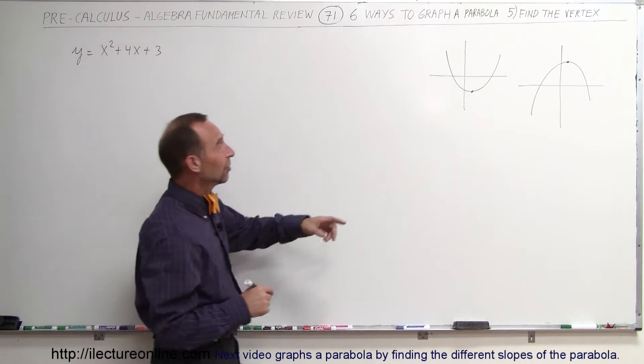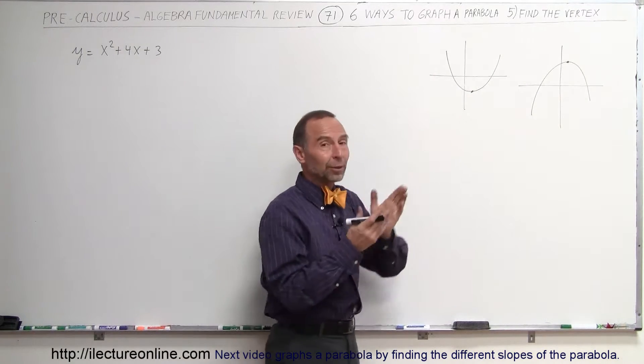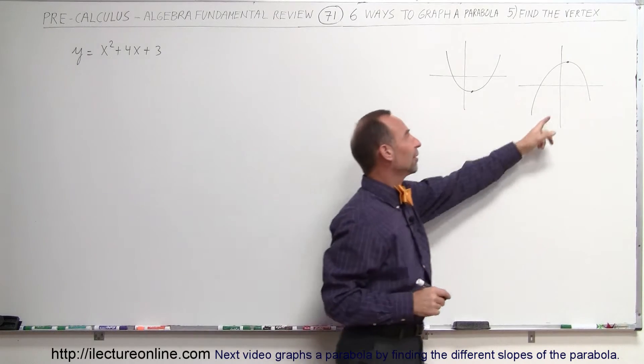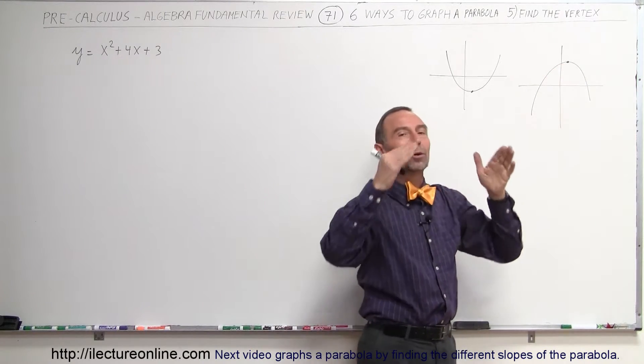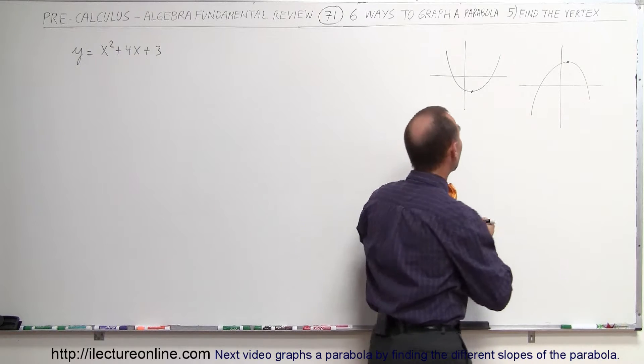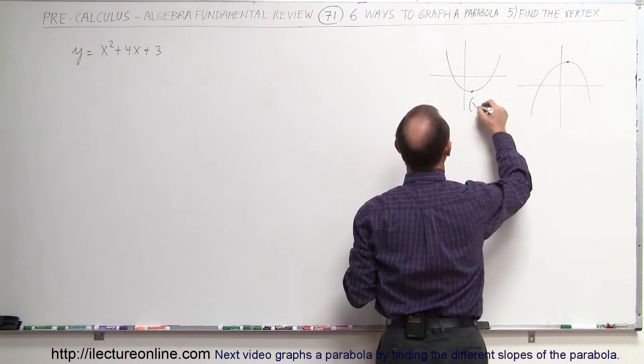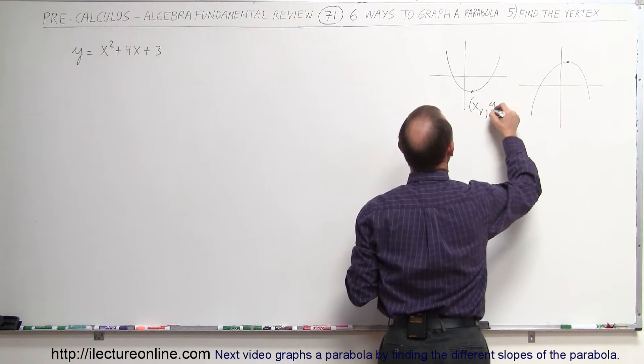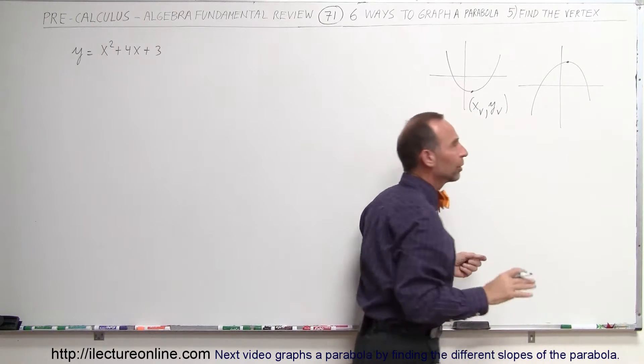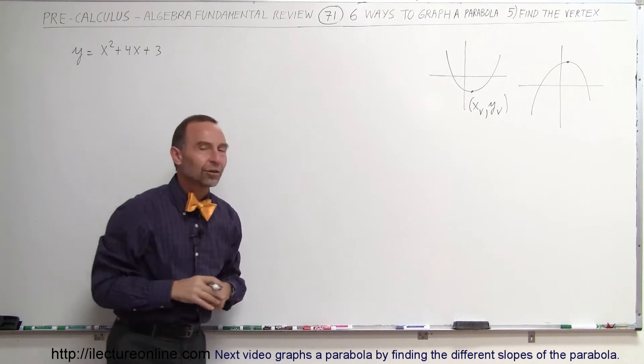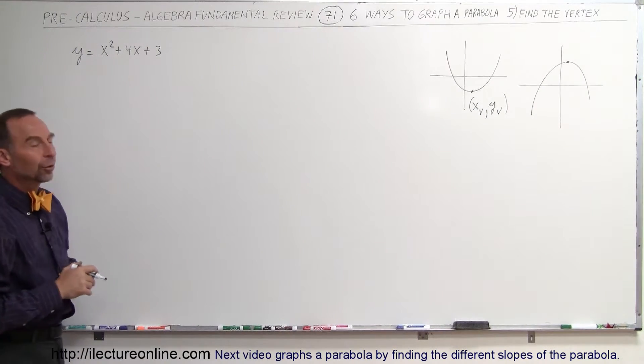Now the vertex of the parabola is the very lowest point on the parabola when the parabola opens upward or the very highest point on the parabola when the parabola opens downward. So that will have an x and a y value so we call that x sub v, y sub v. So those are the x and y coordinates of the vertex and those are the ones we're going to try and find.